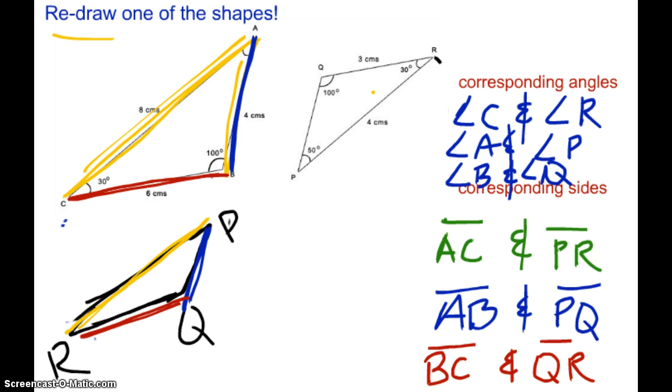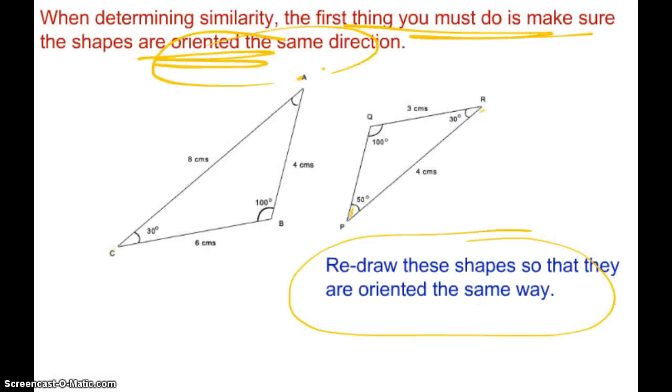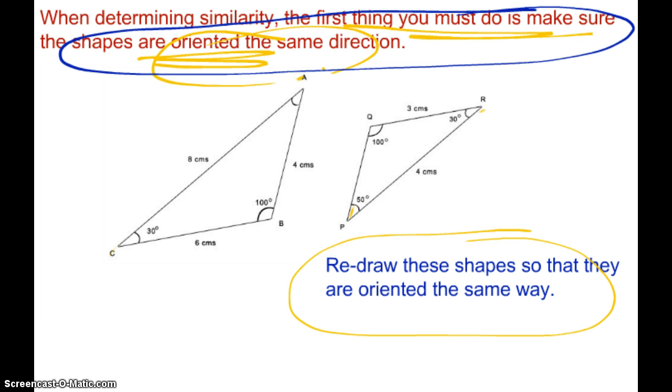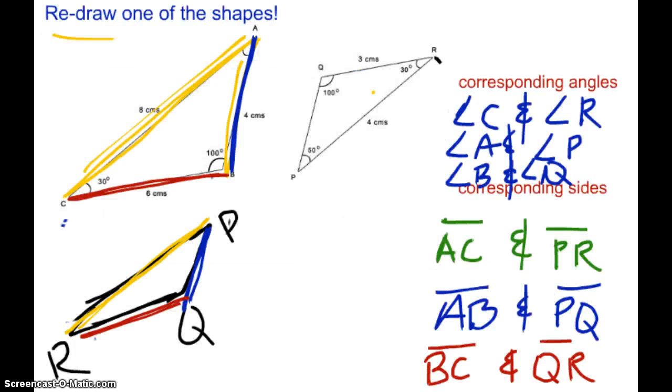That's how to identify your corresponding angles and corresponding sides. In your whisk, make sure that you explain what I mean by the first thing you must do is get the shapes oriented the same direction. And then explain what corresponding angles and corresponding sides actually mean.